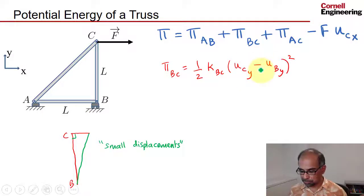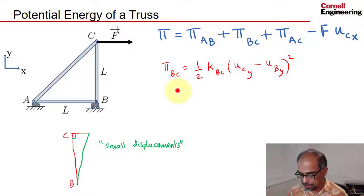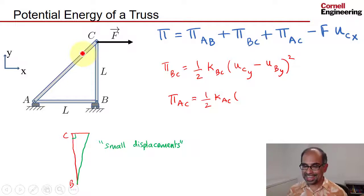What about AC, which is a little bit more complicated because it's inclined? So Π_AC is going to be half K_AC, and then you have to find the extension of AC in terms of the pins A and C and then square it.